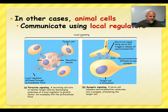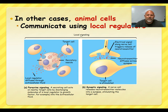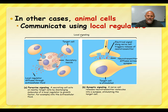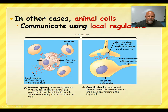Here are examples of paracrine signaling. Para means nearby. For example, if I scrape my knee, we're going to need a lot of cell production. A cell can make lots of growth hormone and release it into the environment, targeting other cells to start mitosis in lots of nearby cells. The cells start dividing at a faster rate until the knee is repaired, and then the signaling stops. This is an example of paracrine signaling.